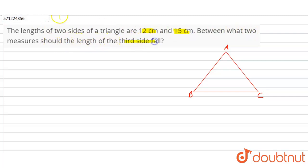So suppose this is a triangle ABC. AB is 12 centimeter and BC is 15 centimeter, and we have to find that between what two measures should AC lie.